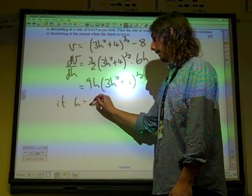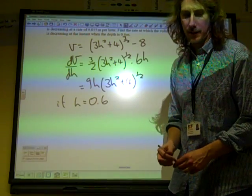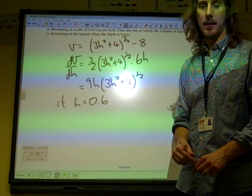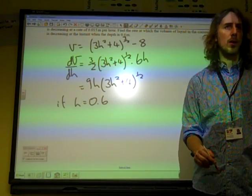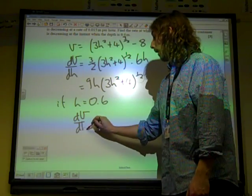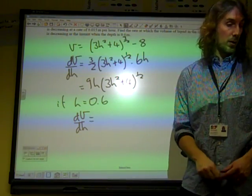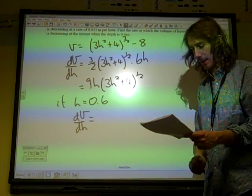Right. If H equals 0.6, we're going to sub that in. And it's going to give us our value. It did say correct to two decimal places. So we're not looking for anything other than just a numerical value. Anybody do this and get the right answer? Yeah. Thanks, Dan.